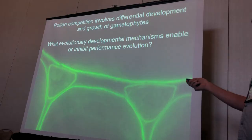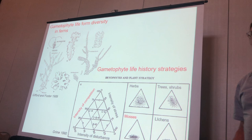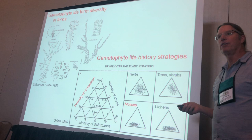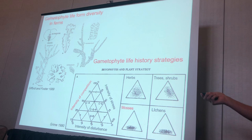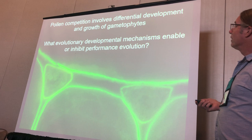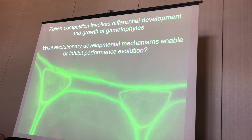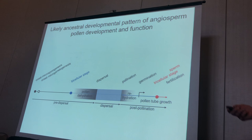That might seem silly because people have studied the evolution of gametophytes for years — not only gametophyte diversity in form and morphology, but also performance of gametophytes. We know for example that mosses have different ecological strategies than other kinds of plants, and competition is being taken into account in those studies. But we don't have a comparable literature for seed plant gametophytes — once you get to seed plants, it just disappears. Pollen competition involves differential development and growth of gametophytes, so what are the evolutionary developmental mechanisms that enhance or inhibit the evolution of performance?